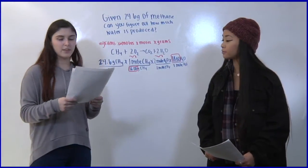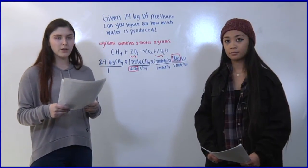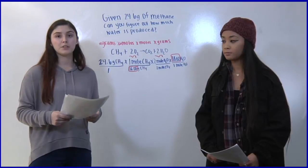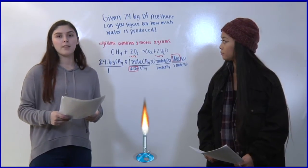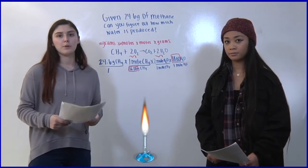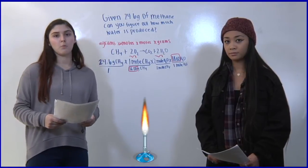In this equation let's find the expected product. In this reaction the burning of methane in a Bunsen burner we're combining methane gas with oxygen to make carbon dioxide and water.